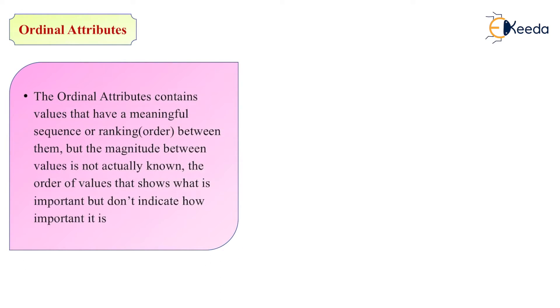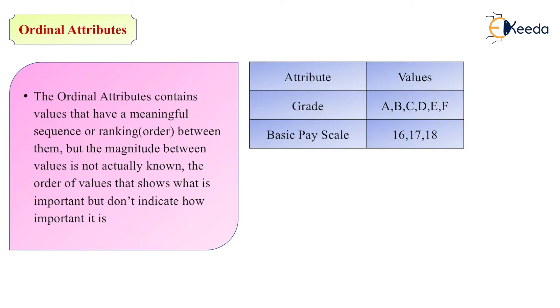Next is ordinal attributes. Ordinal attribute contains values that have a meaningful sequence or ranking or order between them, but the magnitude between the values is not actually known. The order of a value shows what is important but doesn't indicate how it is important. So we can say A is the highest grade, B is the lowest grade.